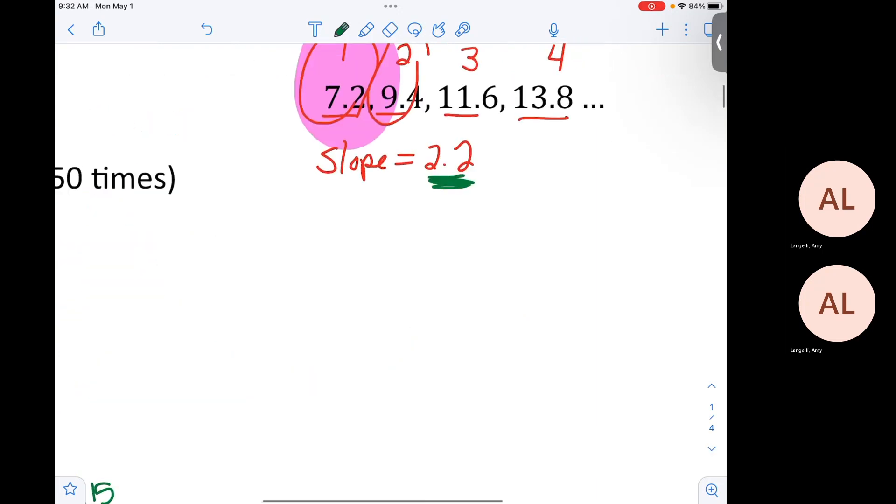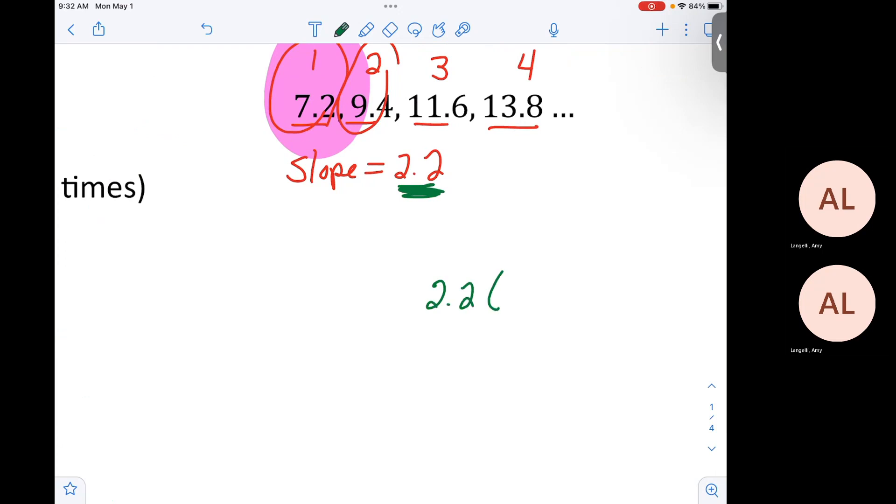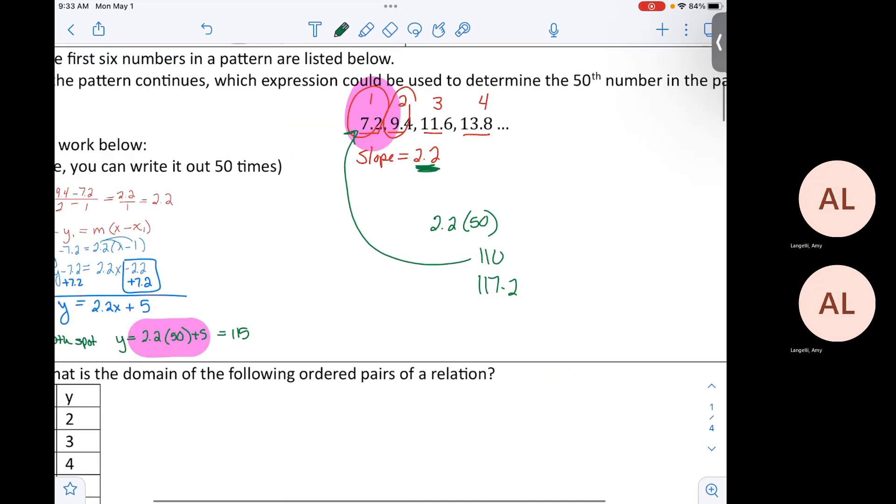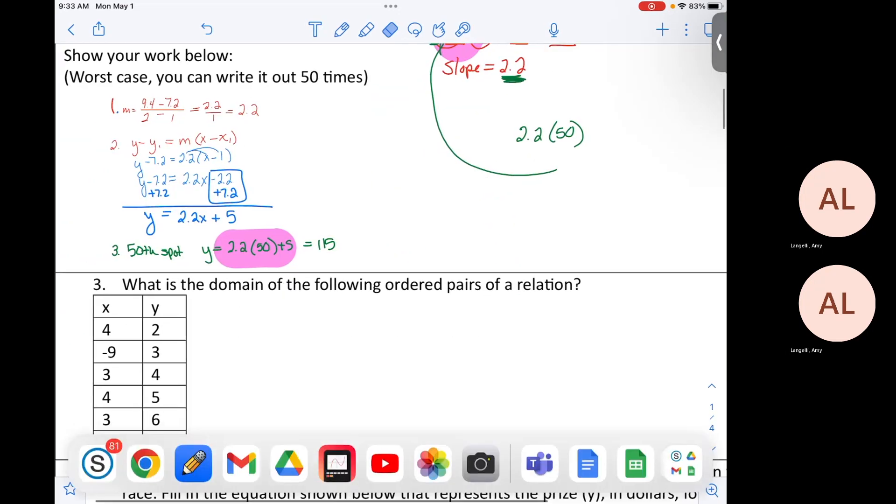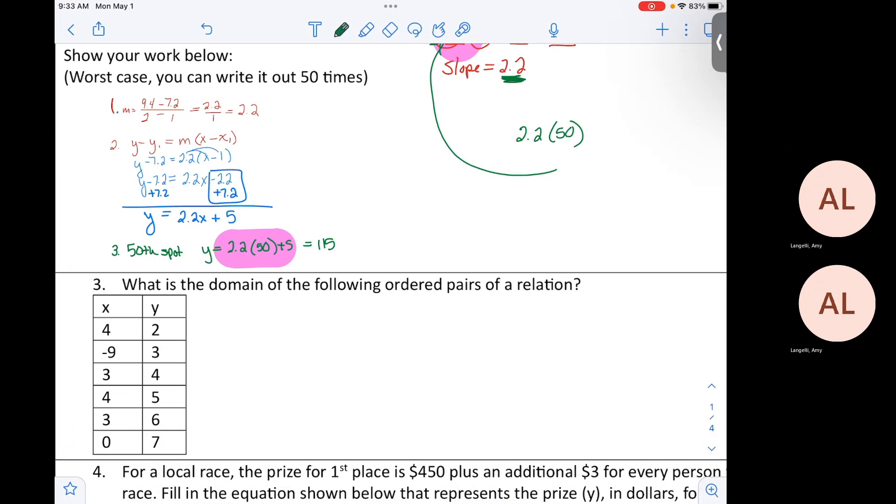Now, that seems long and complicated. Let's say you forget all of that. What is 2.2 times 50? 110. If we were to add that to the first number, we would get 117.2. I'm going to guess that would be a multiple choice option, which is kind of stinky because it seems very tempting. But just take off the slope of 2.2 and that will get you to your answer of 115.